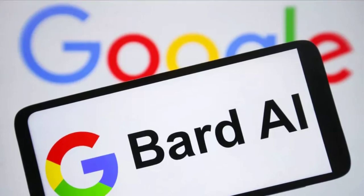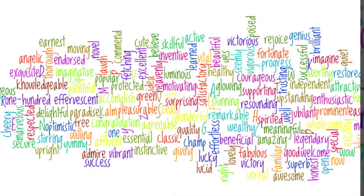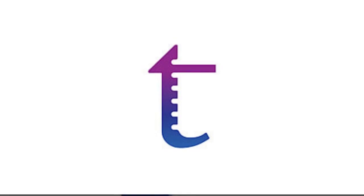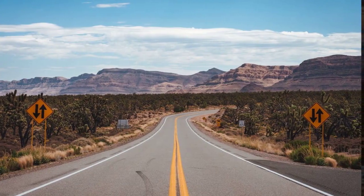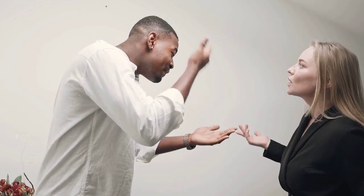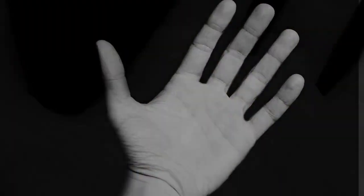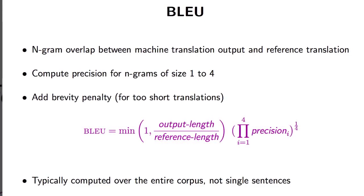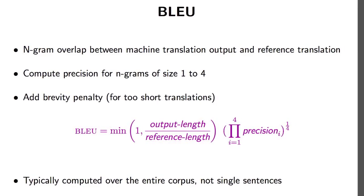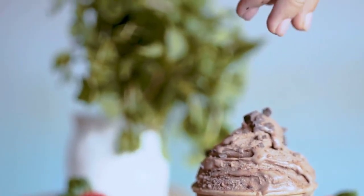Bard takes an auto-regressive route — imagine it like a person who is meticulous, cross-checking everything. It uses previously predicted words to predict the next words in the sequence. On the other hand, ChatGPT is also auto-regressive, but it relies on GPT's fine-tuning capabilities, which are trained on a diverse range of internet text. When it comes to language fluency and coherence, both are like Shakespeare in the AI world. They can hold a conversation, answer your questions, and even write a poem for you. But in terms of raw performance, Bard claims to have the upper hand — it boasts a higher BLEU score, a popular metric to measure machine translation's accuracy. Although it's worth noting that while important, BLEU scores aren't the be-all and end-all. It's like judging an ice cream solely based on its sweetness without considering its creaminess, flavor depth, or if it even gives you brain freeze.